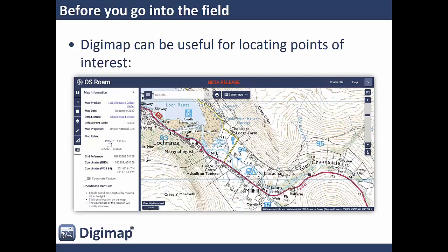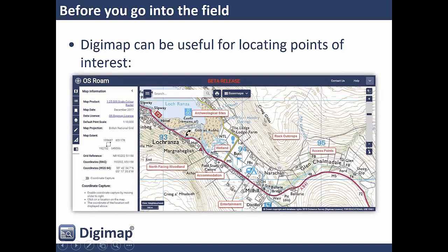We've got a regular Digimap OS modern survey map on screen of an area popular with geology students up on Aran. You can pull off information like accommodation — there's a little red triangle indicating a youth hostel, a field study center you might be able to book, and a campsite. Knowing where you're going to stay when you go to the field is always a good thing.